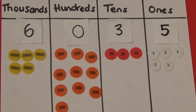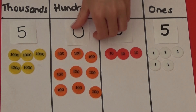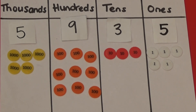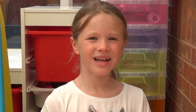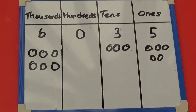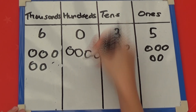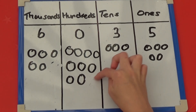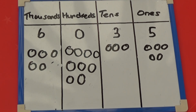I'm going to take 100 away. I have drawn out the counters for the number 6035. I have no 100s to draw out, so I need to exchange one of my 1000s for 10 100s and draw them in the 100s column. I can now take away 100, so my number now is 5935.